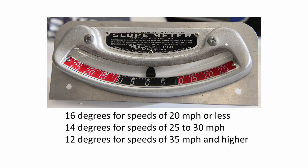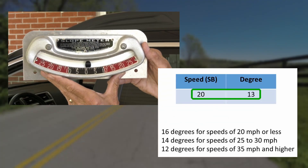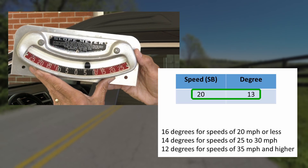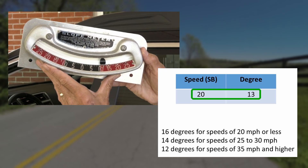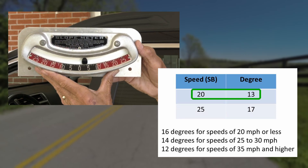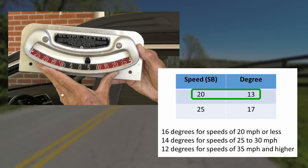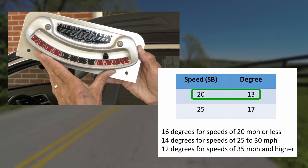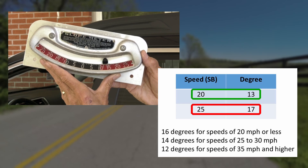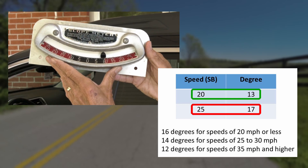These speeds are the driver's actual speed on the curve and not necessarily the regulatory speed limit. For example, if I went around the curve at 20 miles per hour and got a reading of about 13 degrees — looking at the center of the bubble — then that's okay for that curve. Then I drive through 5 miles per hour faster, at 25 miles per hour, and if it goes up to 17 degrees, that is above the allowed level. Therefore, the advisory speed for this example would be 20 miles per hour.